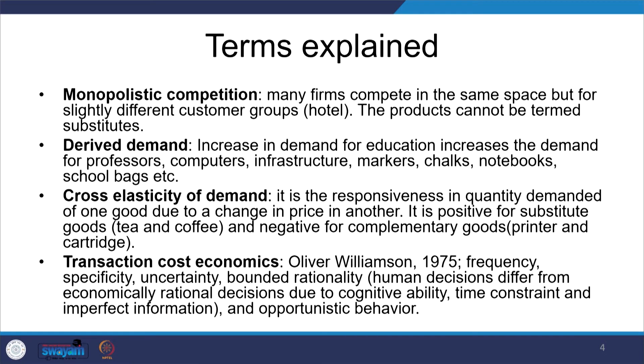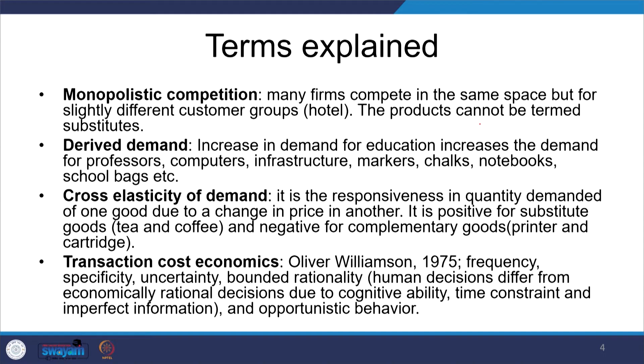Monopolistic competition means many firms compete in the same space but for slightly different customer groups. For example, hotels — there are a large number of service providers. Every hotel provides space for rest or security, but we cannot compare all hotels at once. Certain consumers require a cost-effective hotel, while somebody may go for luxury. Although they all cater to customers, they cater to different kinds of customers, so the products cannot be termed perfect substitutes.